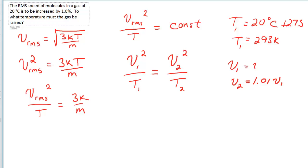So V1 will leave as V1. V2 will plug in as 1.01 V1. Let's see what we get. V1 squared over 293 Kelvin equals 1.01 V1, but that's all squared. So we've got to make sure we get our brackets, over T2.